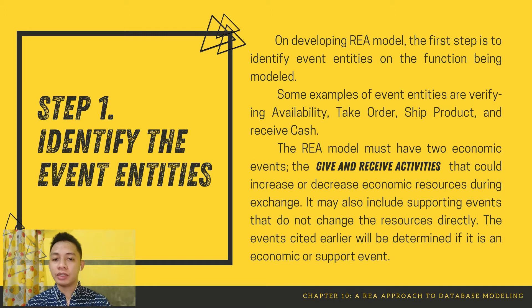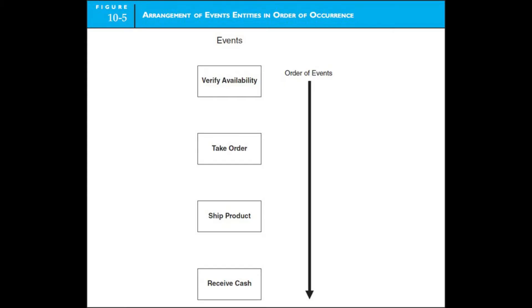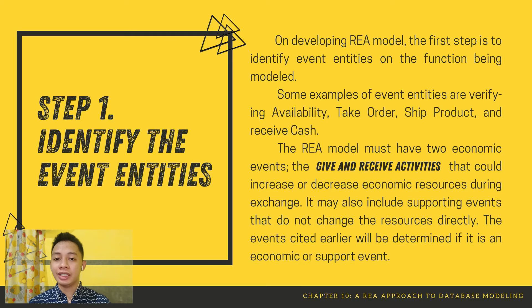On developing the REA model, the first step is to identify event entities in the function being modeled. Some examples of event entities are: verify availability, take order, ship product, and receive cash. The REA model must have two economic events — the give and receive activities — that could increase or decrease an economic resource during exchange. It may also include supporting events that do not change resources directly.